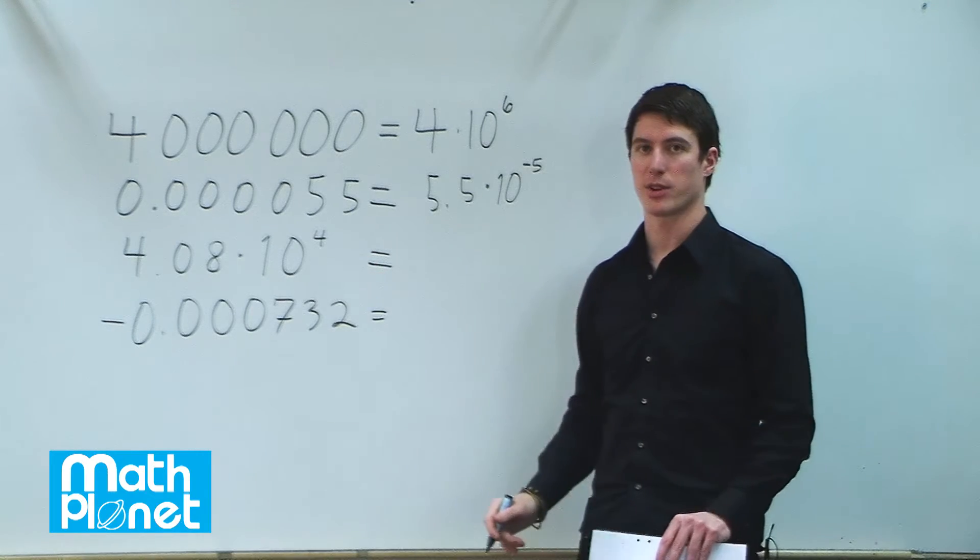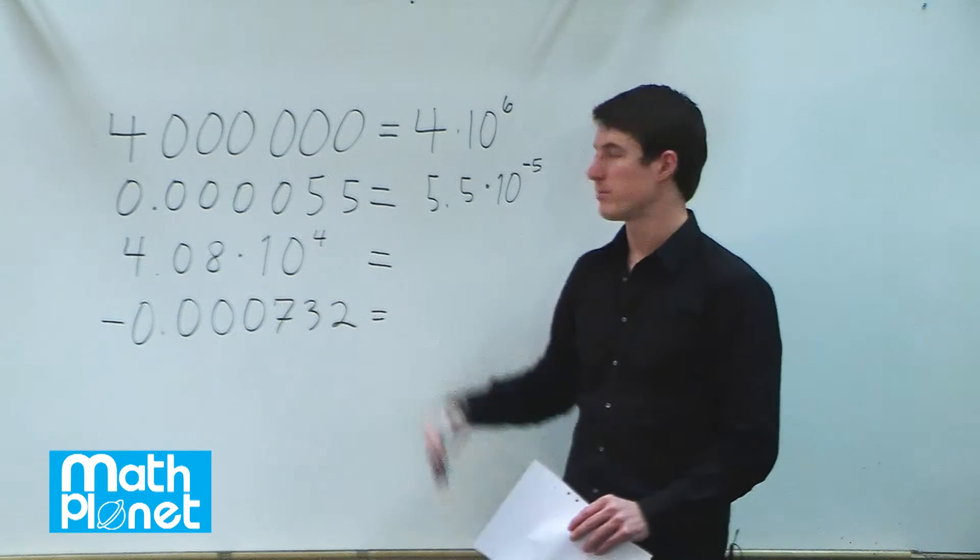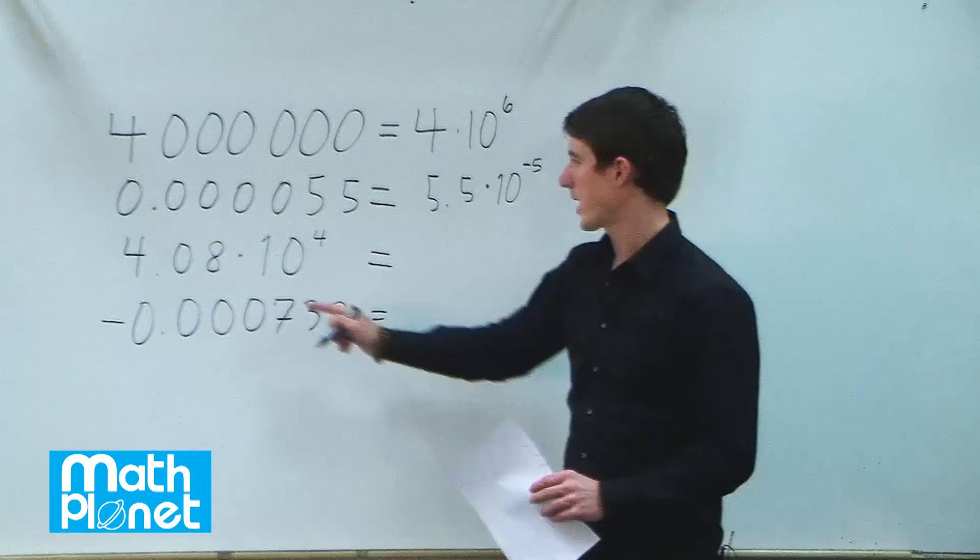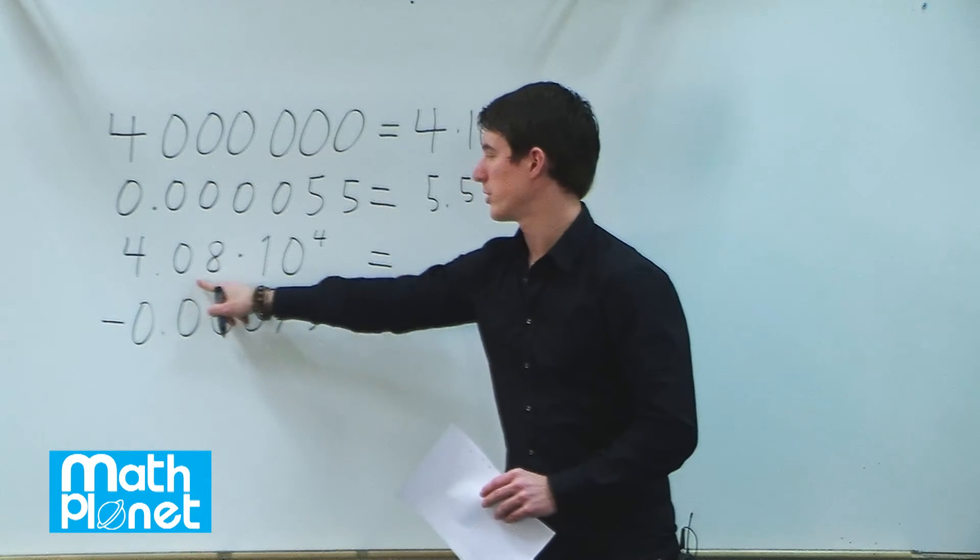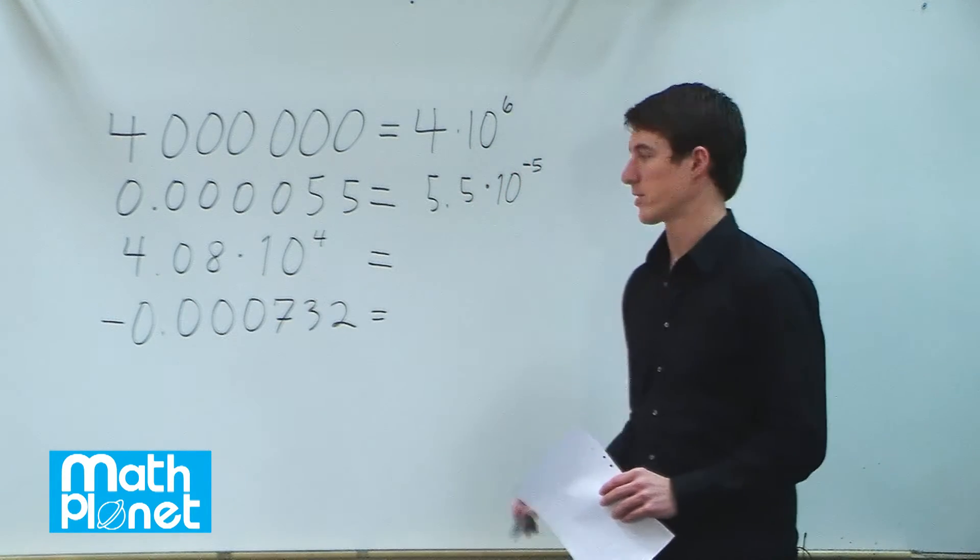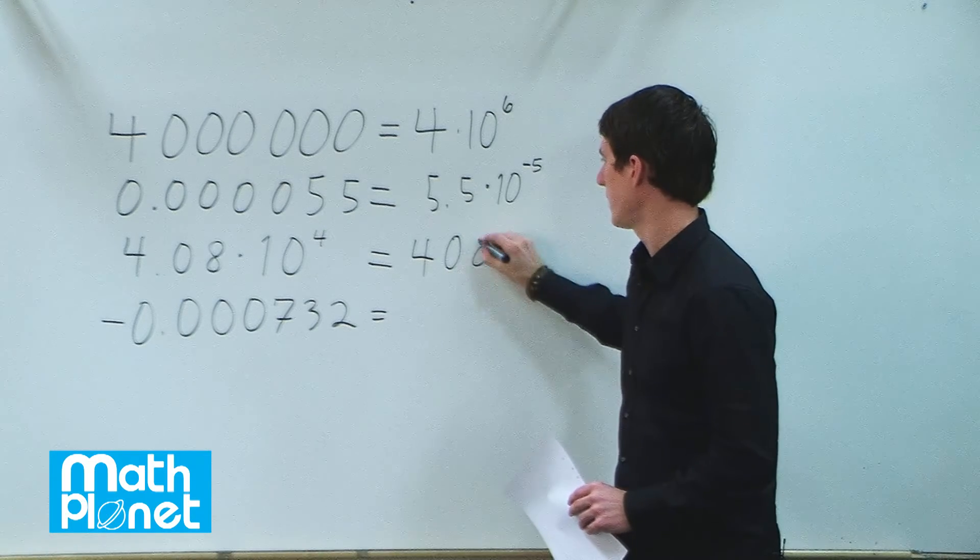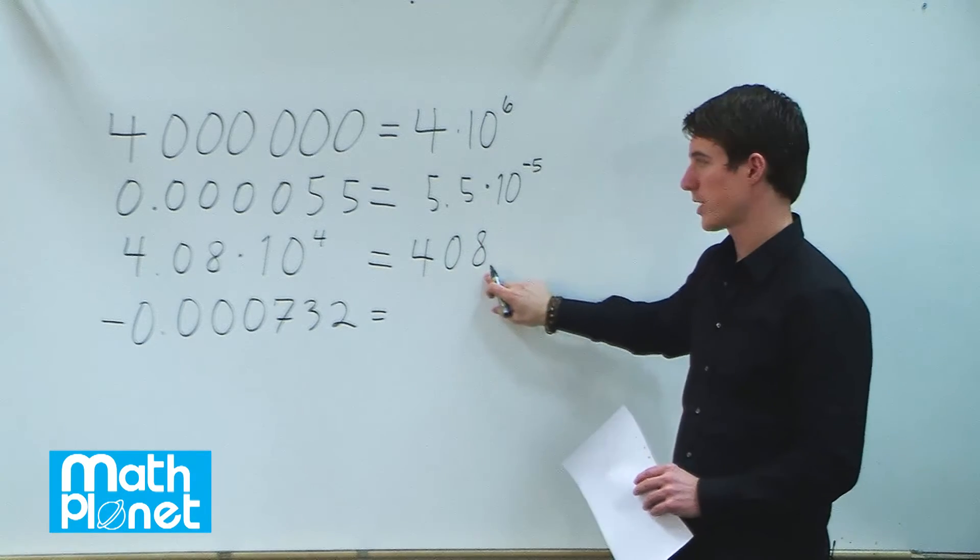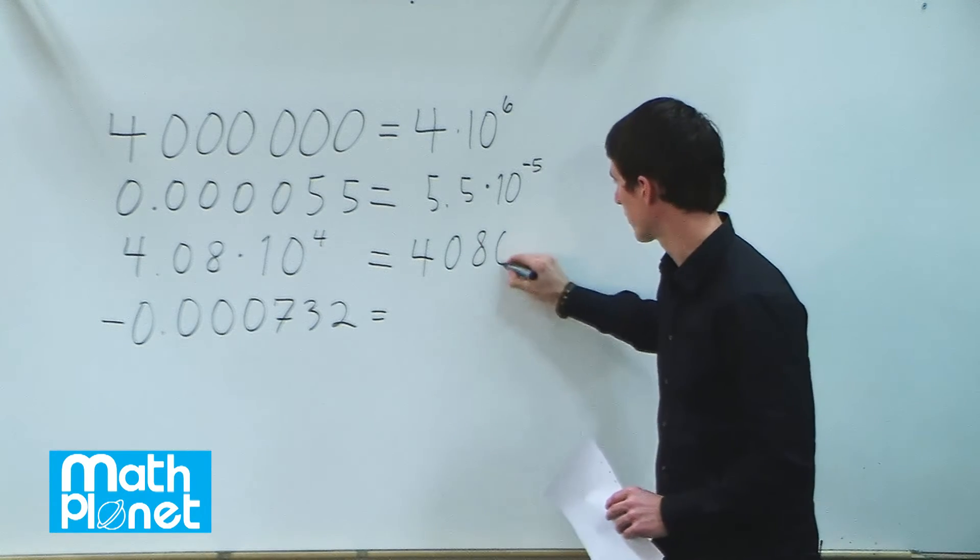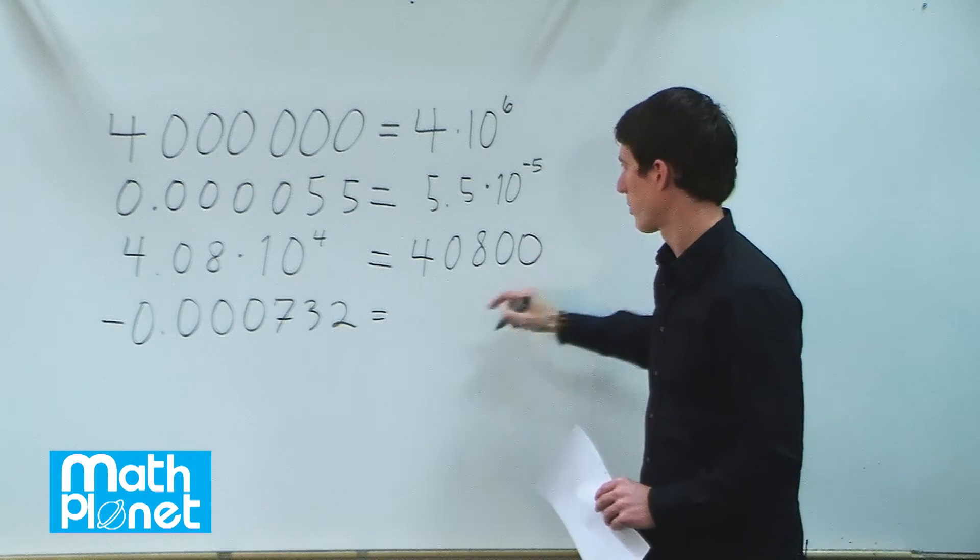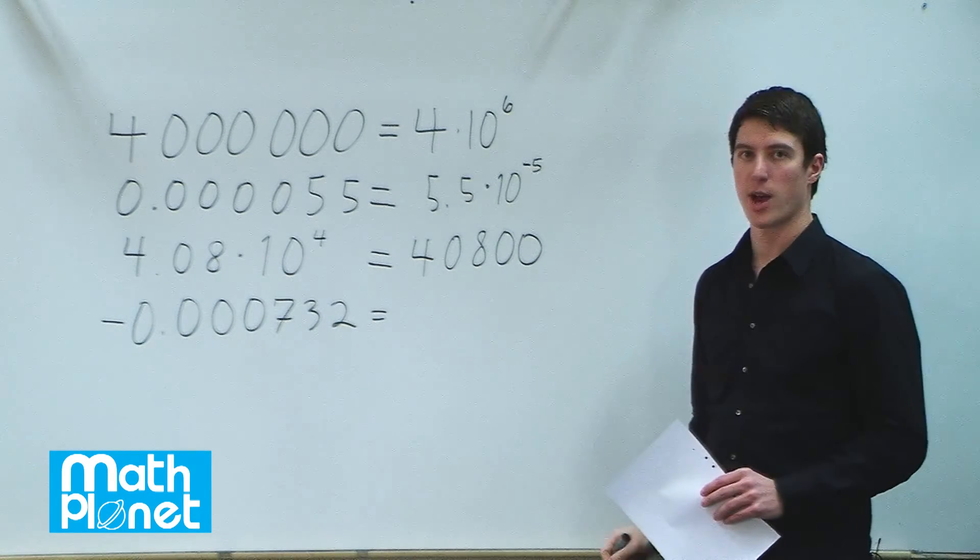Now we have a number in scientific notation, and we want to rewrite it in standard form. We're going to move this decimal to the right by 4 places. So we have 4, 0, 8. We've moved the decimal place 1, 2 times, so we need 2 more zeros. This number becomes 40,800.